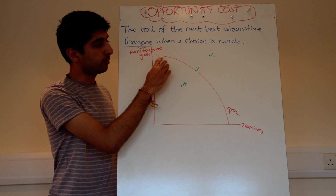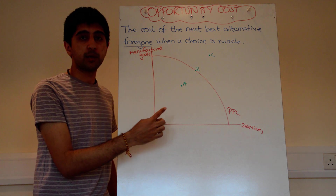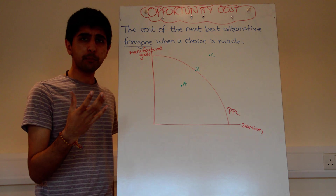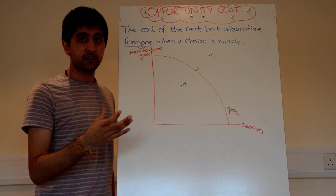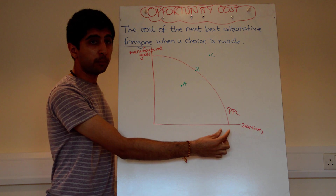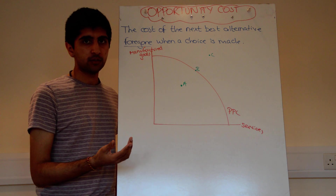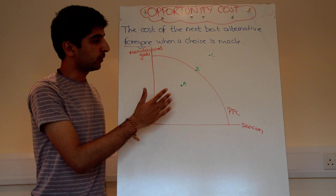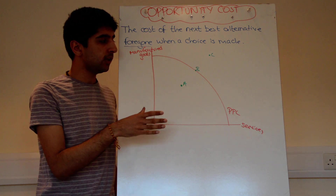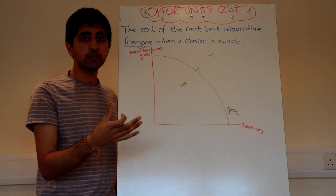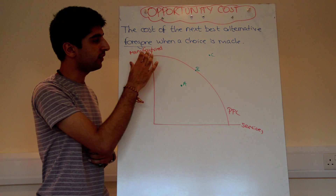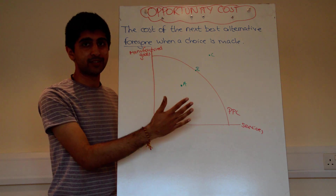The curve also tells us how we can combine those factors of production to produce either goods or services. At one point we can produce more goods than services by combining our factors of production in that specific way. But if we combine our factors of production differently, we can produce a lot more services than goods. The curve tells us the level of scarce resources but also how we can combine factors of production to give different levels of goods or services.